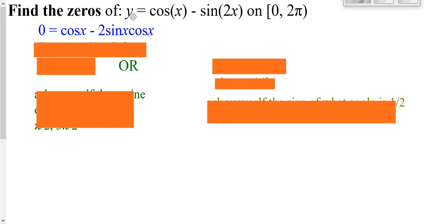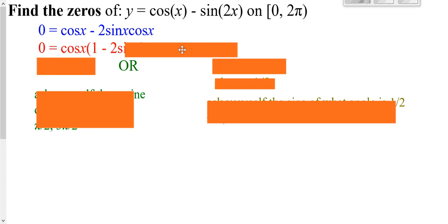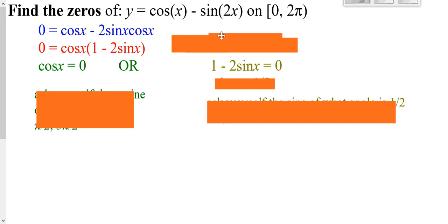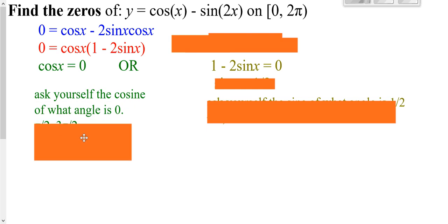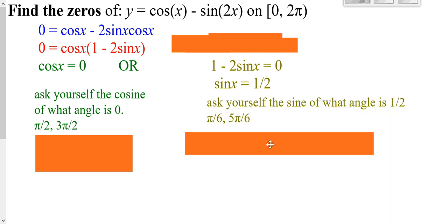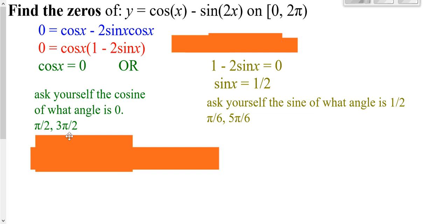Here you're asked to find the zeros of a trig function — the zeros are when the y value is zero, so you set it equal to zero and solve. We have two terms subtracted with a common factor, so we factor that out. We now have two things multiplied together, meaning the cosine could be zero or what's in the parentheses could be zero. Cosine equals zero at pi over 2 and 3 pi over 2 on one revolution. For the other factor, you subtract 1 and divide by negative 2, giving sine equal to 1 half, which occurs at pi over 6 and 5 pi over 6. These four values are your answers.